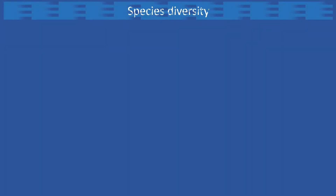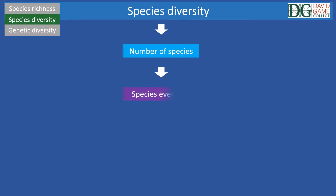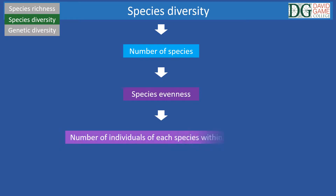Species diversity relates to the number of different species, and also considers the species' evenness, which is the number of individuals of each species within a community.